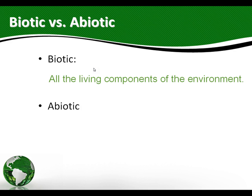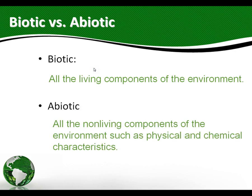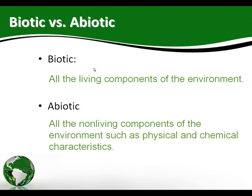So all the living components of the environment. Abiotic — we put an A in front of a prefix like that and it means 'not,' so not living. These are all the non-living components — the environment's physical and chemical characteristics.